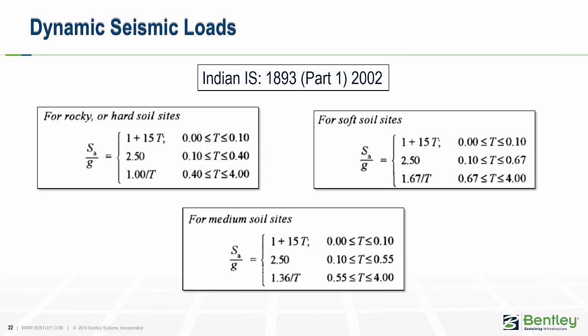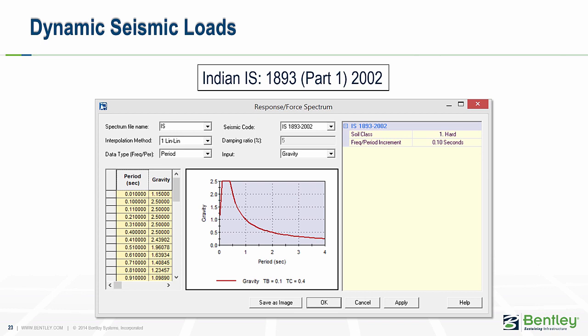The Indian IS 1893 code can be selected in the response spectrum dialog box. The Indian IS Part 2 code contains provisions on liquid retaining tanks and states it should be used in conjunction with IS 1893 Part 1. Therefore, Autopipe considers the general response spectrum equations in Chapter 6. An important note is that for vertical considerations, the vertical acceleration spectrum can be taken as two-thirds of the horizontal acceleration spectrum. IS 1893 Part 1 2002 is designed by the Bureau of Indian Standards and details the criteria for earthquake resistance design of structures. When selected, two inputs are required: the subsoil class and the frequency over period increment, which is the resolution of the table and plot, with accelerations interpolated from the periods during dynamic analysis.